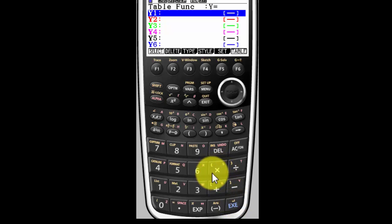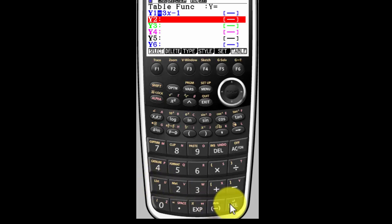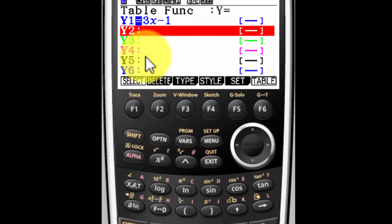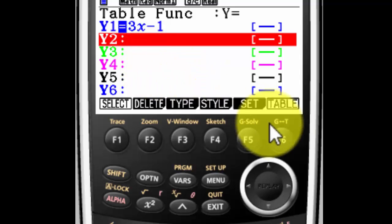Now the function that I'm going to put in is 3x minus one. And execute tells the calculator I'm done with that function. You can go ahead and go on to the next one. If you'll notice, the equal sign is highlighted. That's good. That means that's an active function.